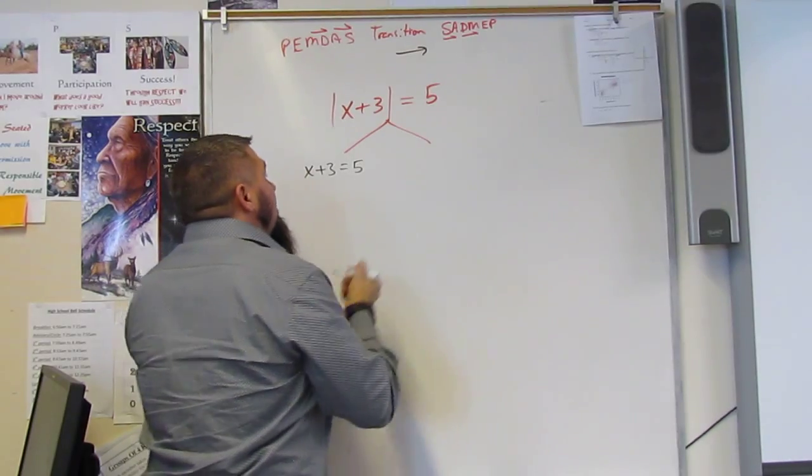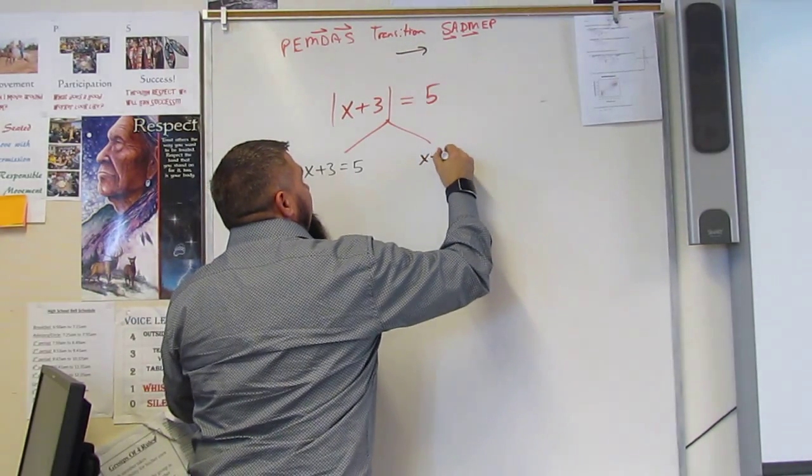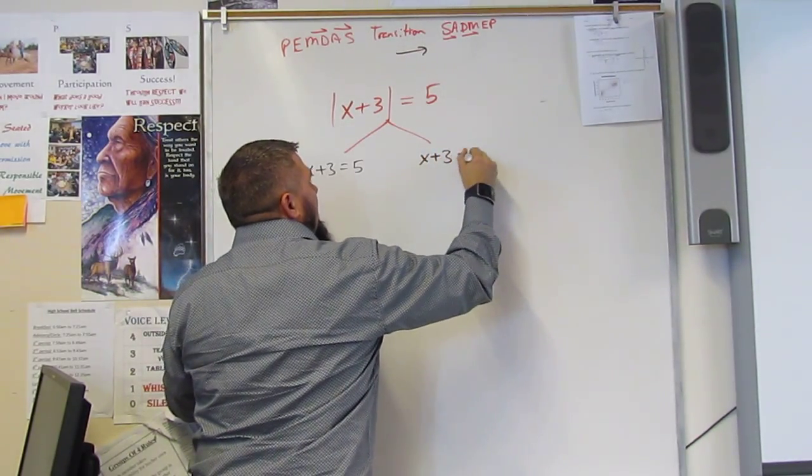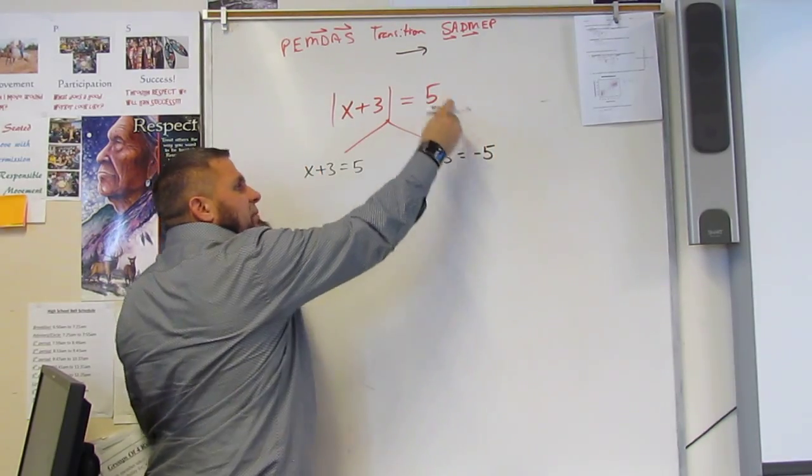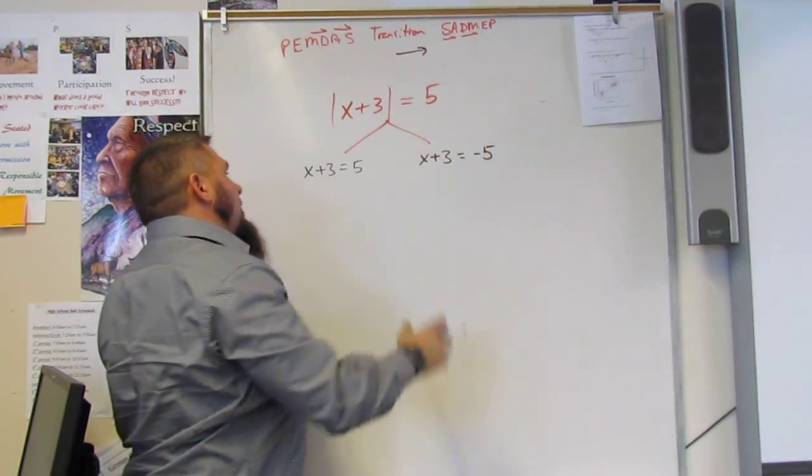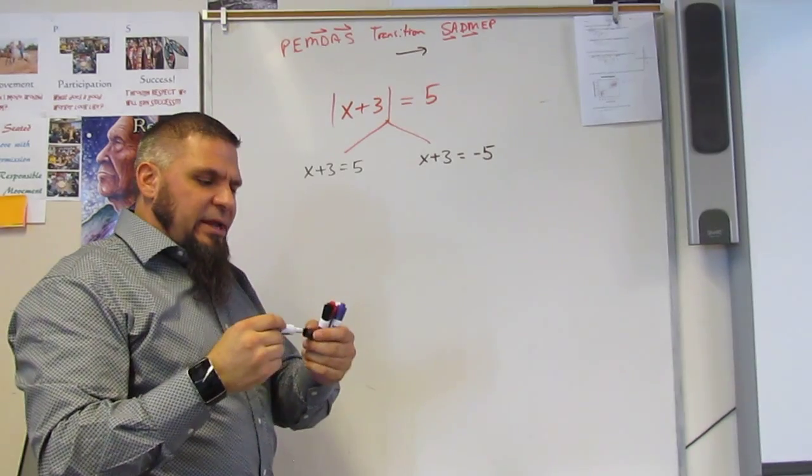And two, x plus 3 equals negative 5. So one of them is going to give me a negative answer, and one of them is going to give me a positive answer.